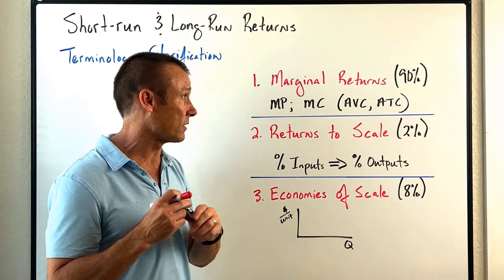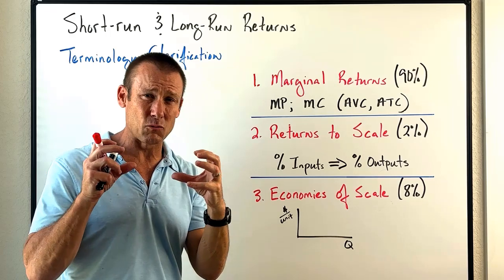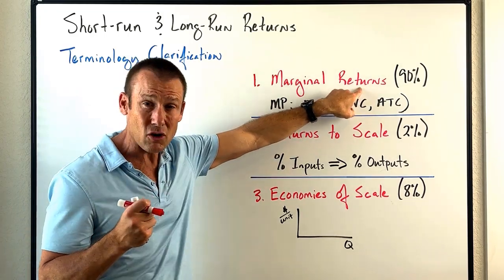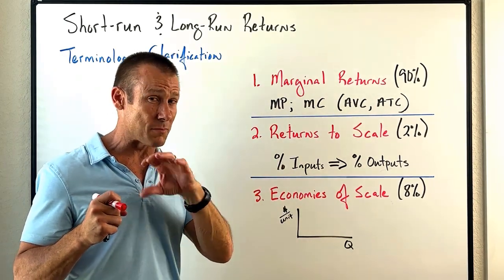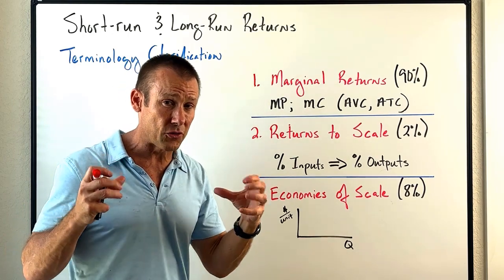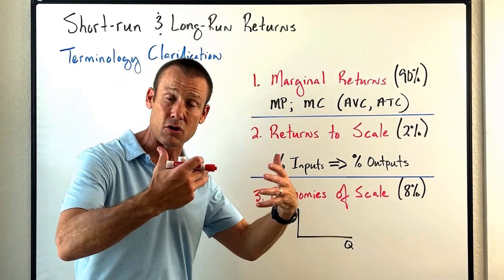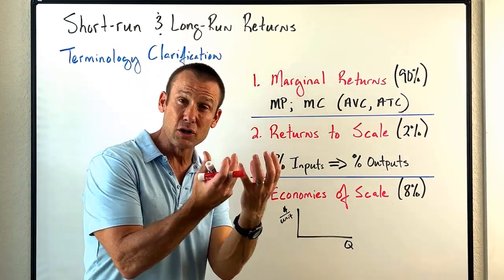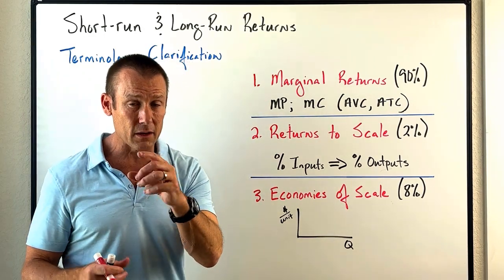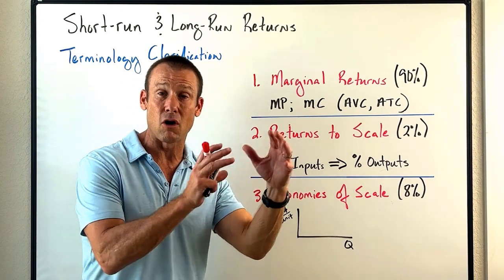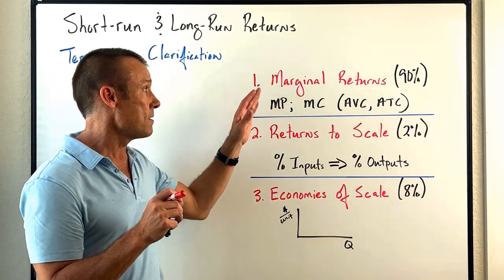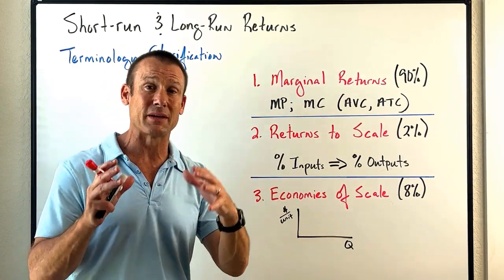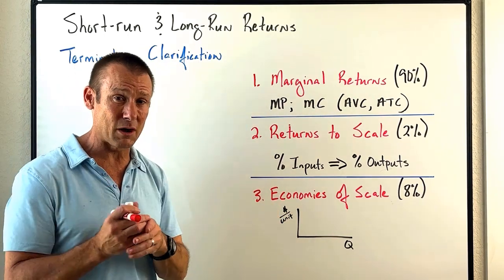Let me define marginal returns. The word 'returns' — if you say that to a financial person they'll think dollars, but as a microeconomist, economists generally focus on real things like outputs. When you hear 'returns,' think change in output. So marginal returns is asking: what's the change in output — how many more goods or services are you going to be able to produce — when you change a variable input by one, keeping all other inputs constant?